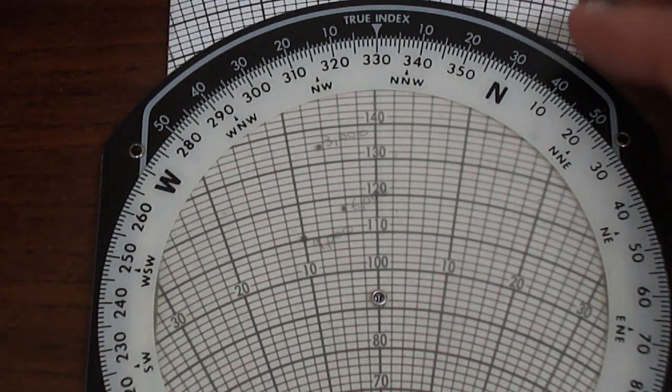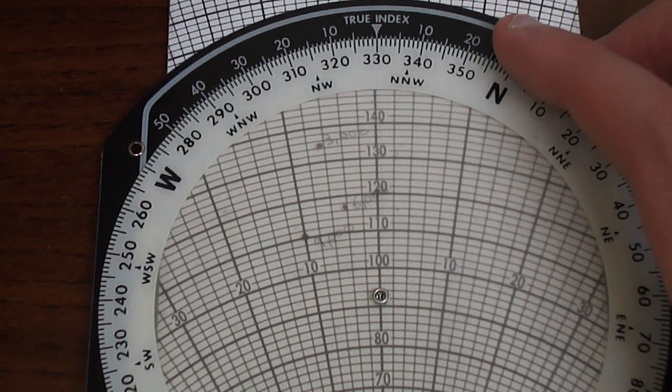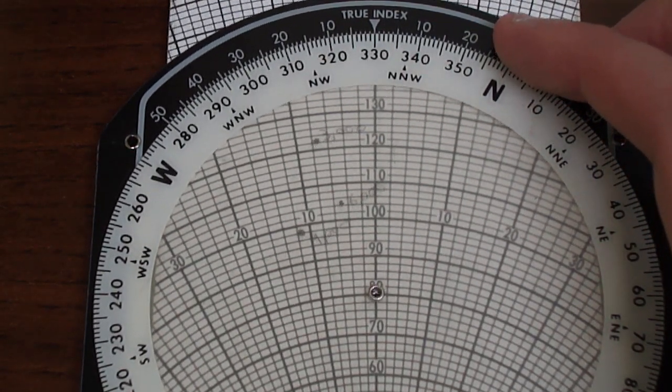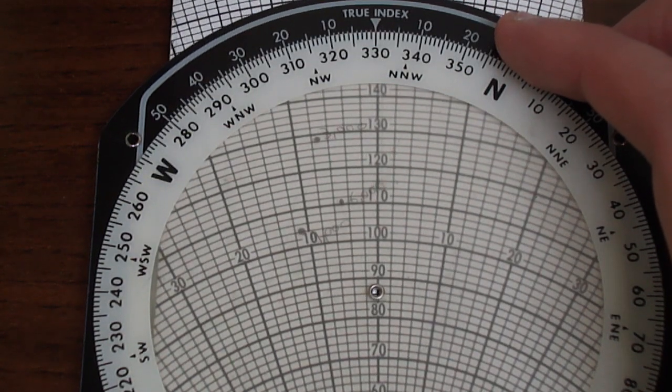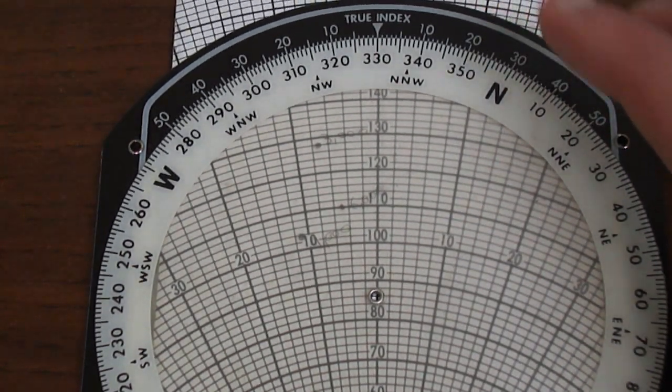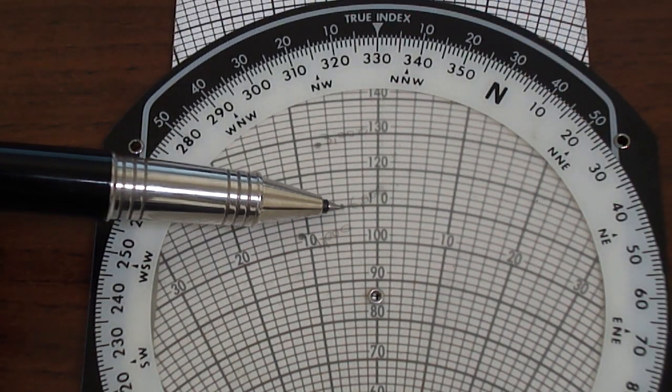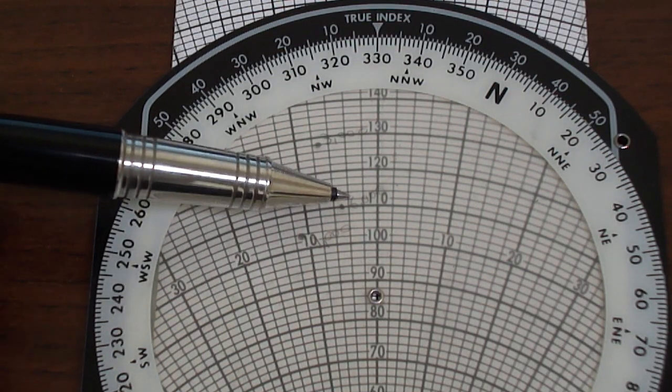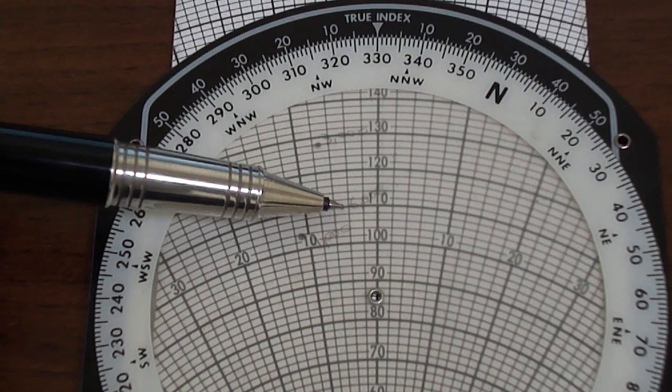If we then slide the card down so that 6,000 is now lined up with 110 knots, our ground speed will be around 85 and our wind correction will be minus 5.